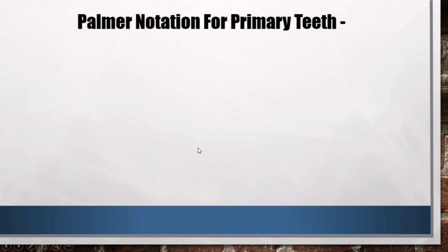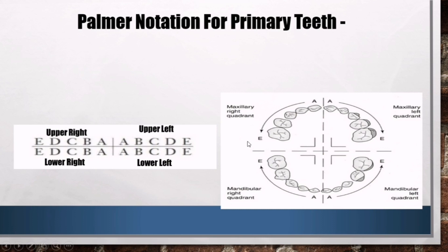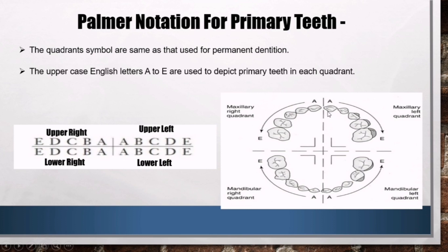Sigmondi-Palmer Notation for Primary Teeth: the quadrant symbols are the same as those used for permanent dentition. The uppercase English letters A to E are used to depict primary teeth in each quadrant. The numbering starts from the midline and continues backward. For example, A is the central incisor, B is the lateral incisor, C is the canine, D is the first molar, and E is the second molar.